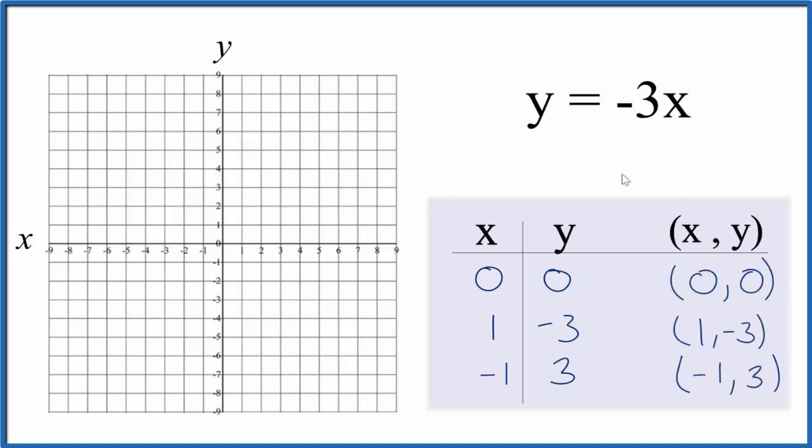So these are the points that we'll graph for the equation y equals minus 3x. Let's start out 0 for x, 0 for y. So here's 0x and 0y right there. Let's do 1 for x and then negative 3 for y. Then we'll have negative 1 for x and 3 for y. So negative 1x and we go up 3 for y.